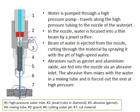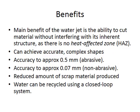Using high pressure water to make a cut in the metal, the main benefit is the ability to cut material without interfering with its inherent structure, as there is no heat affected zone. You can achieve accurate and complex shapes — it's accurate to about 0.5 millimeters with abrasive and 0.07 millimeters non-abrasive. Not as precise as laser cutting, but still quite good for a simple technology with no heat affected zone. There's a reduced amount of scrap material produced and the water can be recycled using a closed loop system.